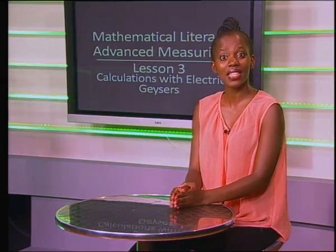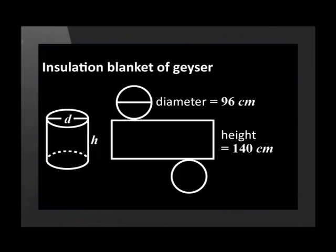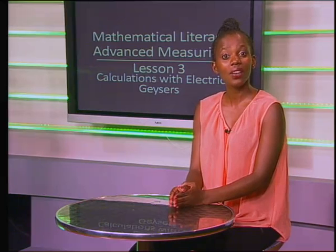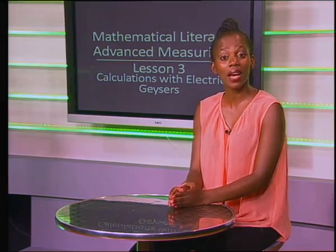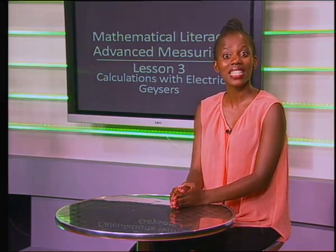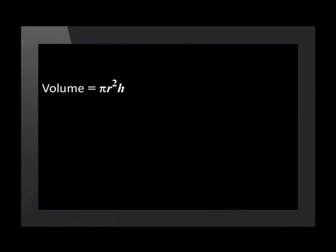Now that we know how to keep the geyser insulated so that the water stays hotter for longer, we need to investigate how much water the geyser can hold. Using the measurements of the cylinder, let's calculate the volume of water in the geyser when it's full. When calculating the volume of a three-dimensional object, we first find the area of the base and then multiply it by the height. The base shape of a cylinder is a circle. Volume equals pi multiplied by the radius squared multiplied by the height. The radius is 48 centimeters and the height is 140 centimeters.